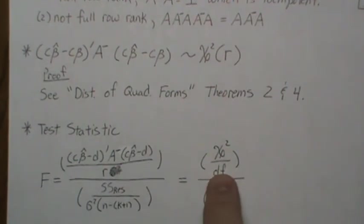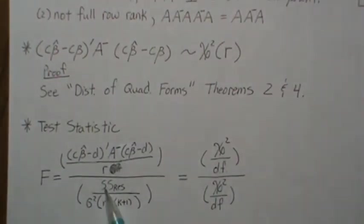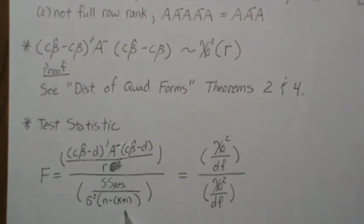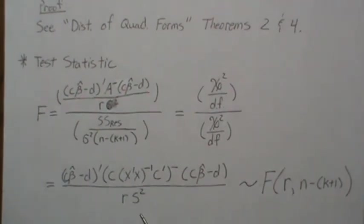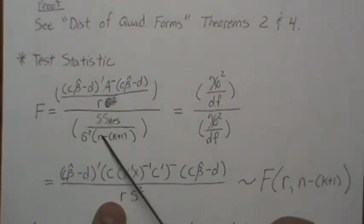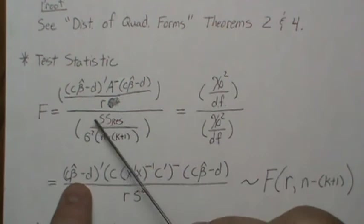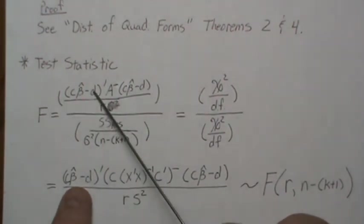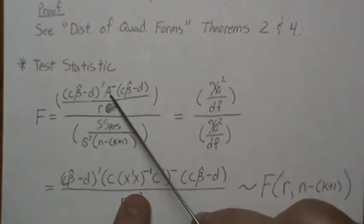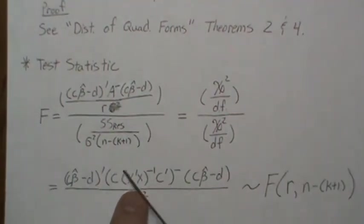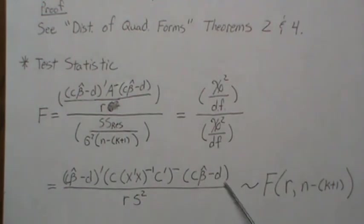The test statistic divides that chi-squared by its degrees of freedom R. The sum of squares residual divided by sigma-squared is chi-squared with n - (k+1) degrees of freedom. Dividing chi-squared/R by chi-squared/(n-k-1) gives an F distribution. Note that A contains sigma-squared, so when written out explicitly the sigma-squareds cancel, and under the null hypothesis C*beta = D so D replaces C*beta_hat in the numerator. The denominator s-squared = SSR/(n-k-1) is an unbiased estimate for sigma-squared.